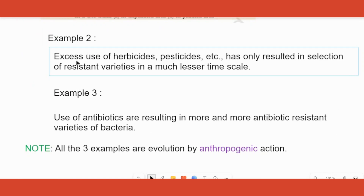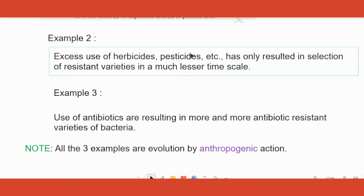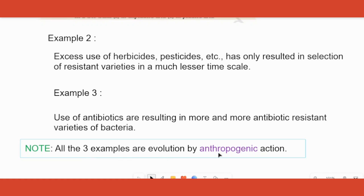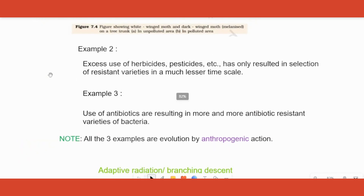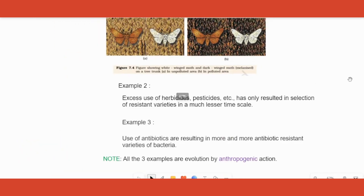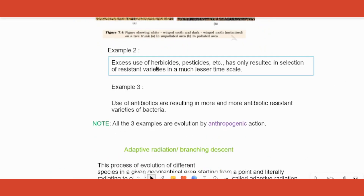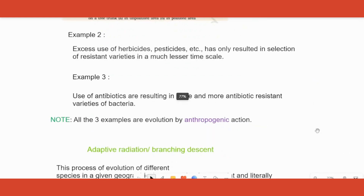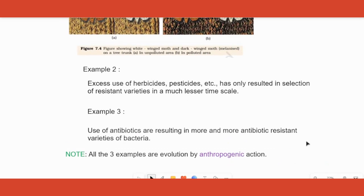Two more examples are given in the textbook: increased use of herbicides and pesticides is resulting in resistant varieties of herbs and pests, and increased use of antibiotics is resulting in antibiotic-resistant bacteria. A possible exam question is to give examples of evolution by anthropogenic action, meaning human action. All three examples — peppered moth, herbicide resistance, and antibiotic-resistant bacteria — are due to human action and can be written in that answer.